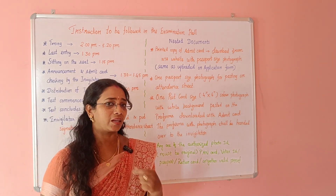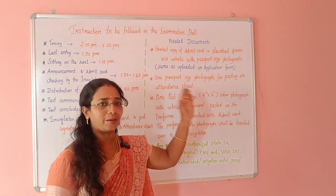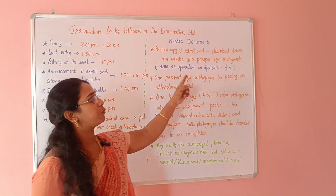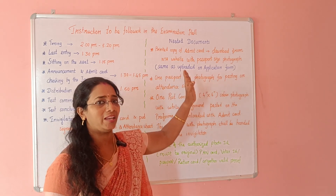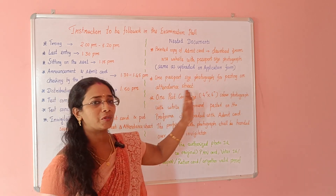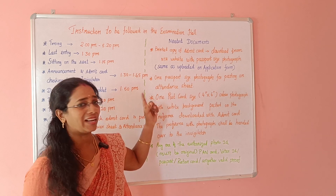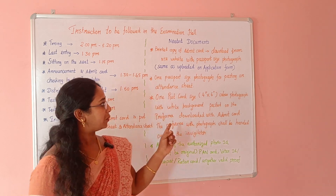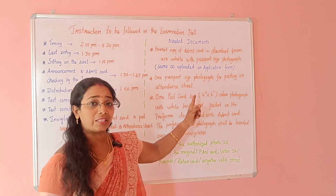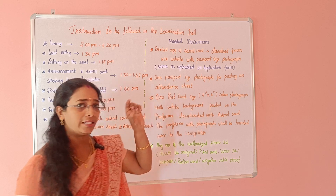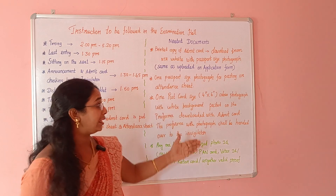In the NTA, you will print a long-awaited photograph, same as uploaded on the application form. If you want to print a passport size photograph, you will paste it in the attendance sheet. One postcard size photograph — this is 4 by 6 inches.